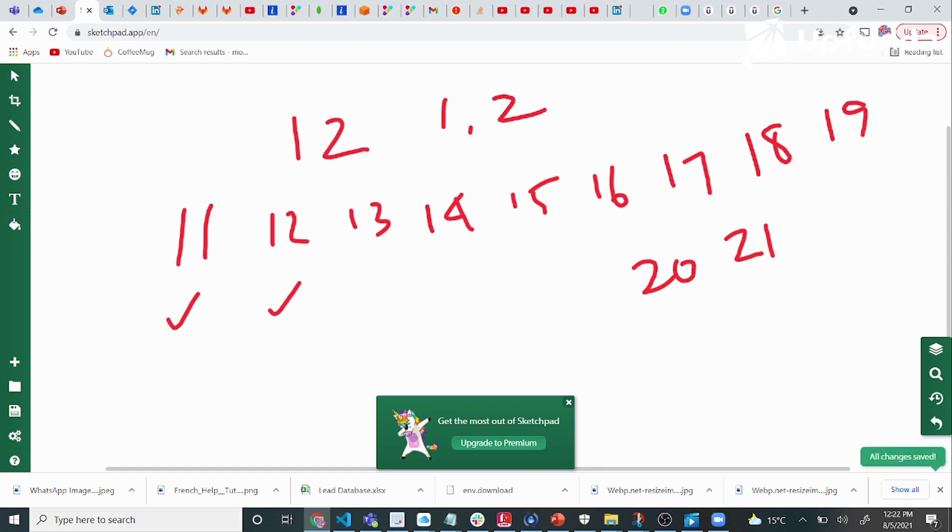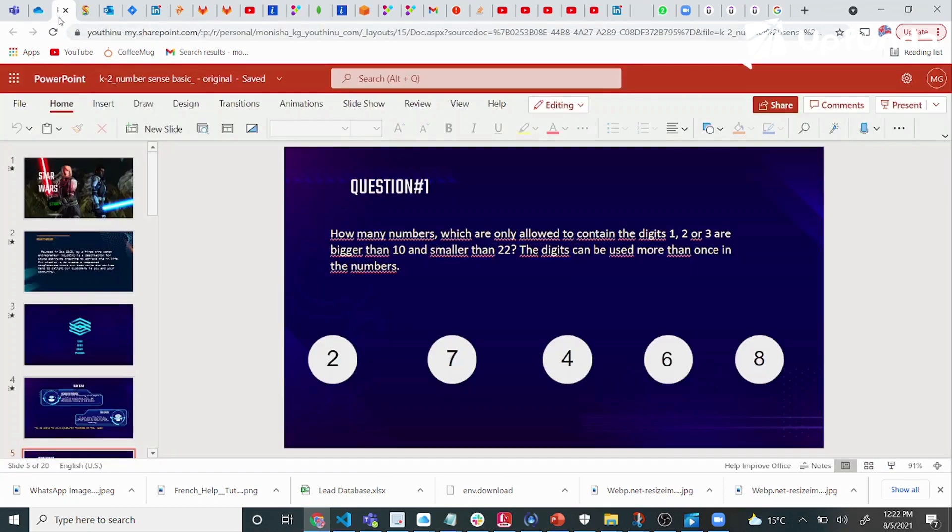1 and 2, 1 and 3. This won't come, this won't come, all this won't come. And this will come because it has the digits 1 and 2. So there are totally four numbers that satisfy the conditions.